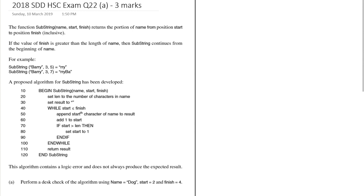We are going to work through a 2018 HSC exam question for Software Design and Development — this is question 22, part A, worth three marks. The function 'substring' has three parameters: name, start, and finish, and returns the portion of name from position start to position finish inclusive.